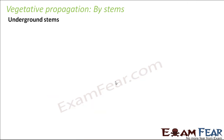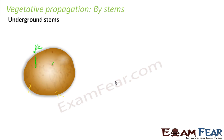The next type of stem modification involves underground stems. While runners run horizontally above the ground and give rise to new roots and shoots, there are certain types of stems which are modified into structures present below the ground — these are called underground stems. A very common example is the potato.